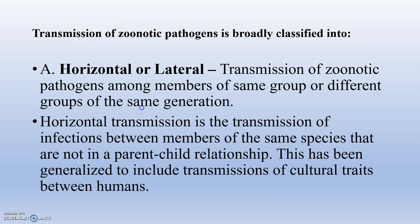Transmission of zoonotic pathogens is broadly classified into horizontal or lateral transmission — that is, transmission among members of the same group or different groups of the same generation. Horizontal transmission is the transmission of infections between members of the same species that are not in a parent-child relationship, and has been generalized to include transmission of cultural traits between humans.